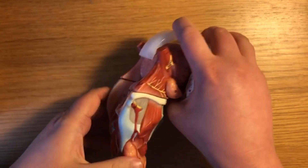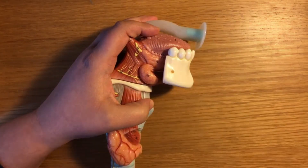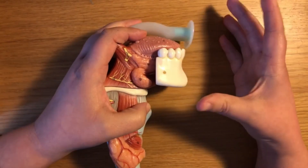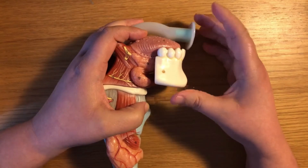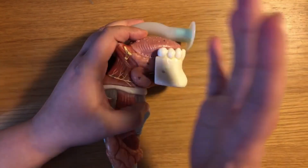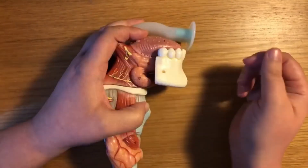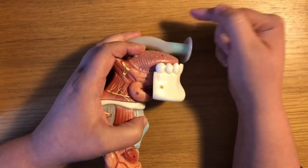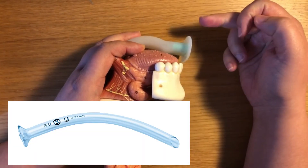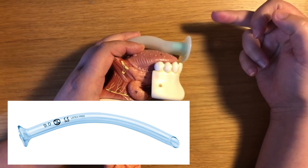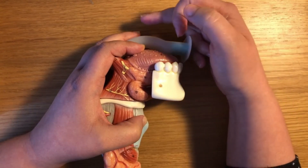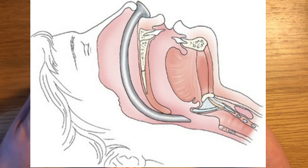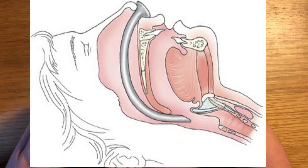If the patient is able to ventilate spontaneously but is unconscious to the point where the tongue could occlude the airway, you may put in an oropharyngeal airway, or something called a nasopharyngeal airway, which by the same principle is passed through the floor of the nasal cavity and nasopharynx, with its tip sitting in a similar position to keep the tongue off the back of the oropharynx.